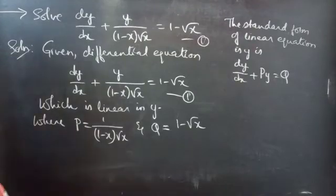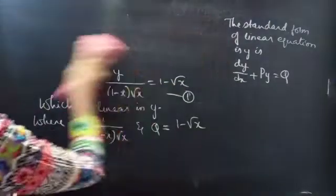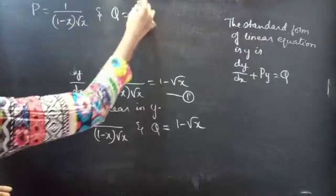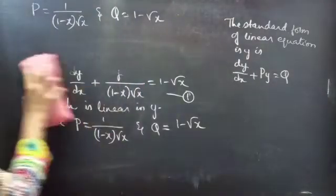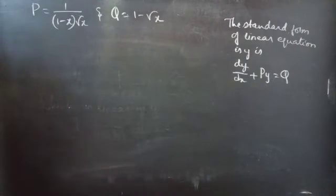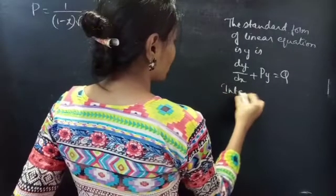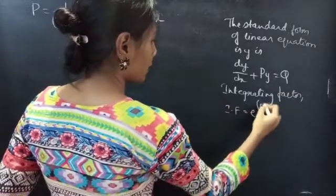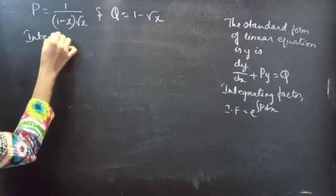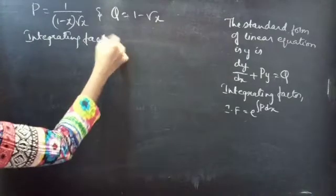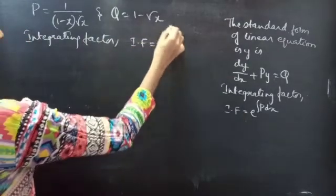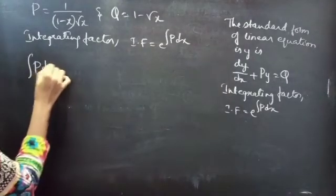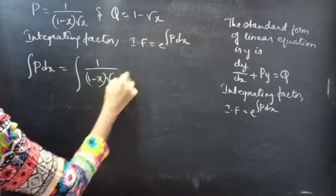Now we need to find the integrating factor for the given equation. We know that the integrating factor of a linear equation in y is e raised to the power of integral P dx. We will use this formula, so before finding the integrating factor, we will find integral P dx. It equals the integral of 1 divided by (1 minus x)·√x, dx.